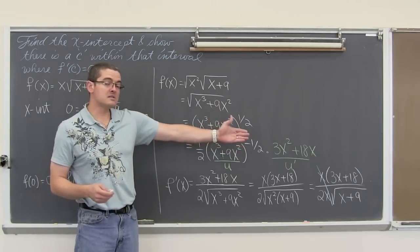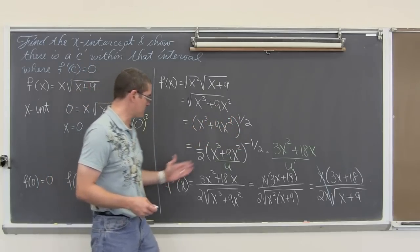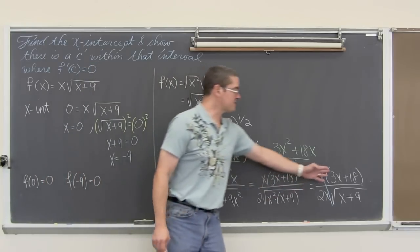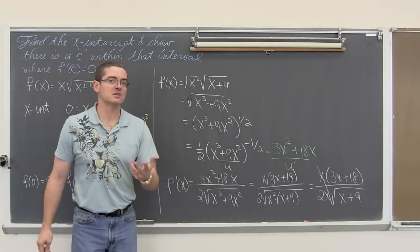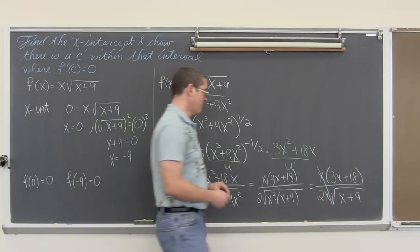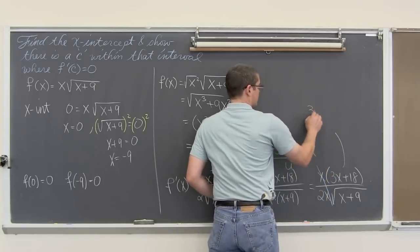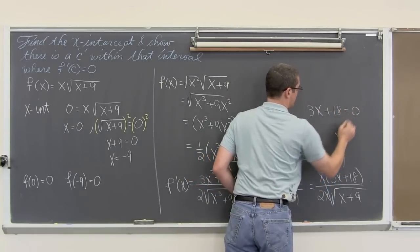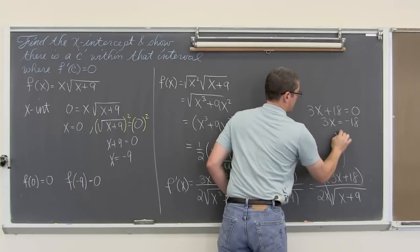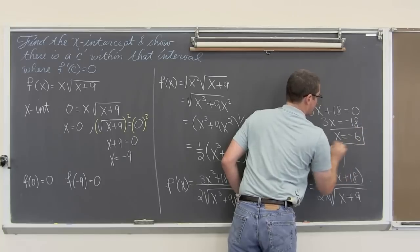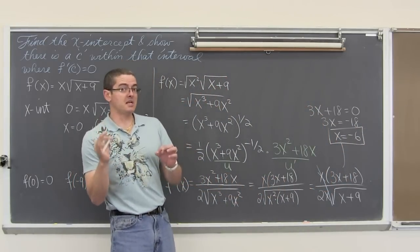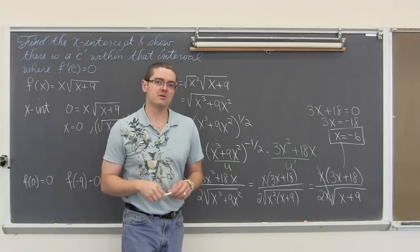When is that function, when is this first derivative going to equal zero? Well, this first derivative is a rational function, and when your rational function, when you have a fraction, the fraction equals zero when the numerator is equal to zero. So, I am going to carry this up. I am going to set 3x plus eighteen equals zero. That means 3x is equal to negative eighteen, and x is equal to negative six. Well, that is the value, that is the x coordinate, or c, where our first derivative is equal to zero.